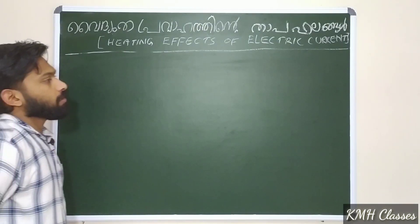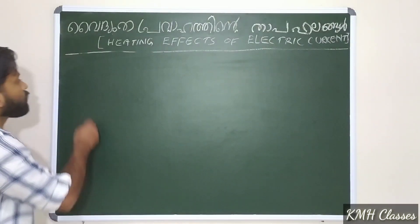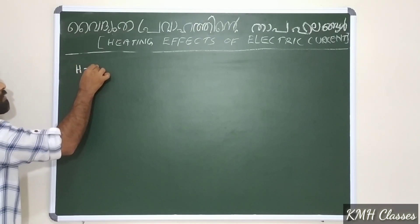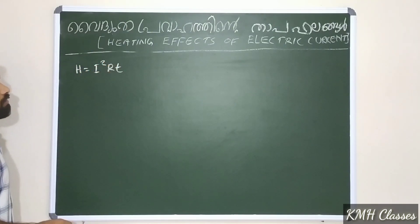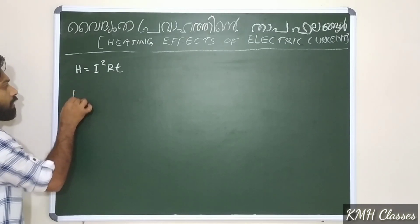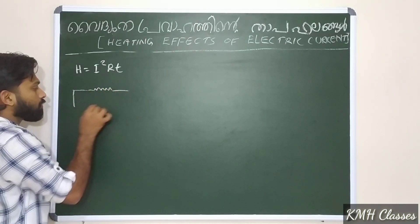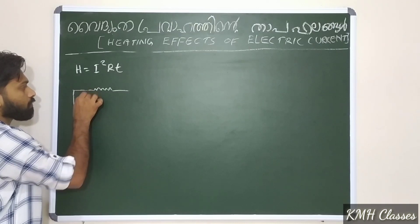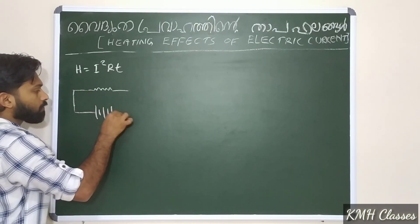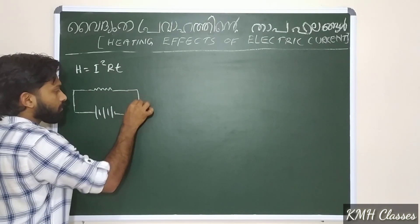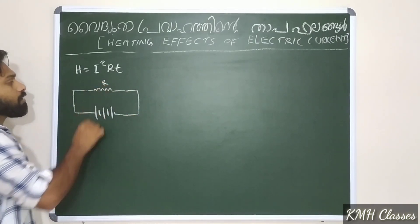Let's see how we can calculate this. We need to calculate H, which is equal to I squared R T. We have a resistance in our hands. We have a necromania resistance and a battery connected.